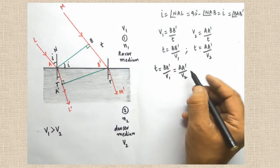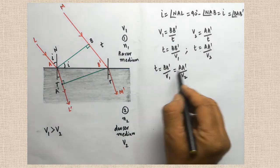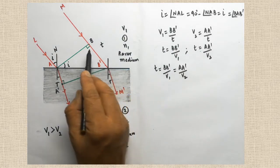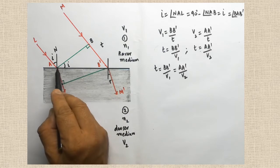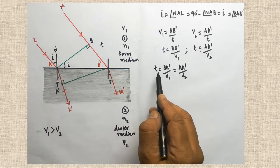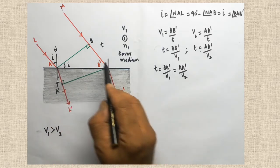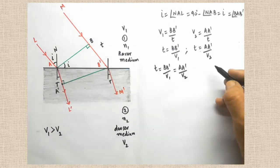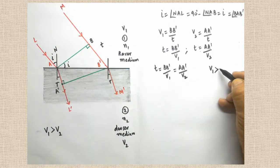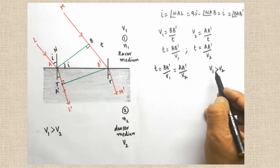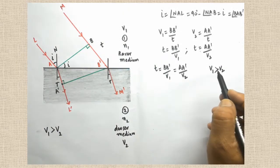Why can these two be equated? Because the time taken to travel BB dash and AA dash are both the same. The important thing here is V1 is greater than V2.